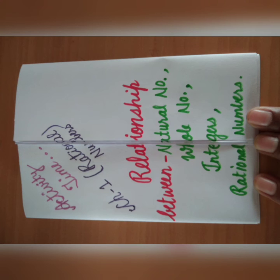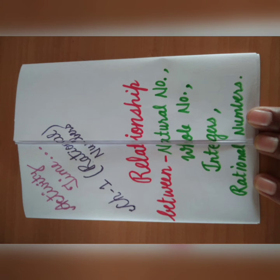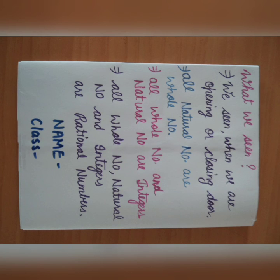We've seen all natural numbers are whole numbers. All natural numbers and whole numbers are integers. All whole numbers, natural numbers, and integers are rational numbers. At the end you have to write your name and class and submit to your class teacher. I hope you understood all these activities.